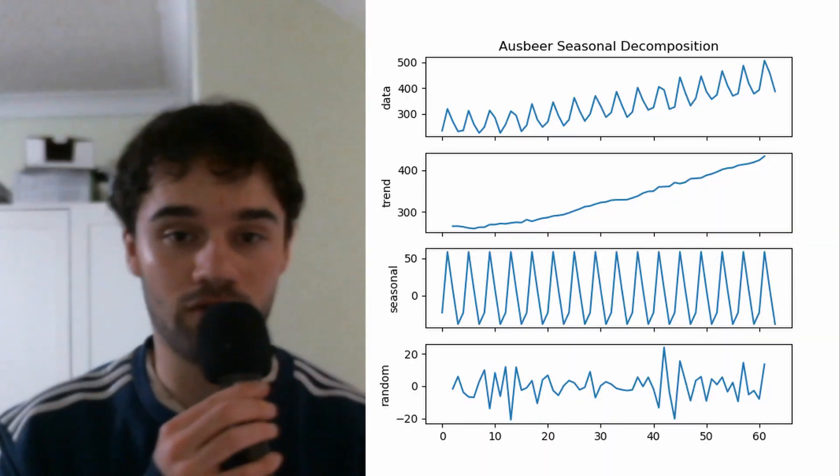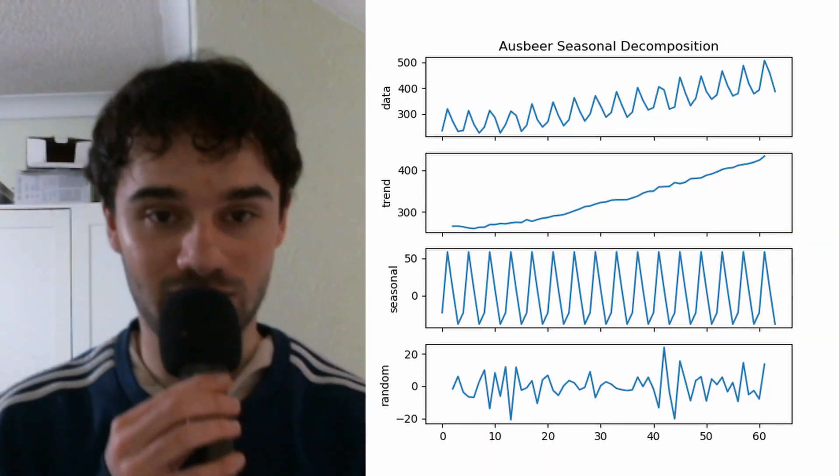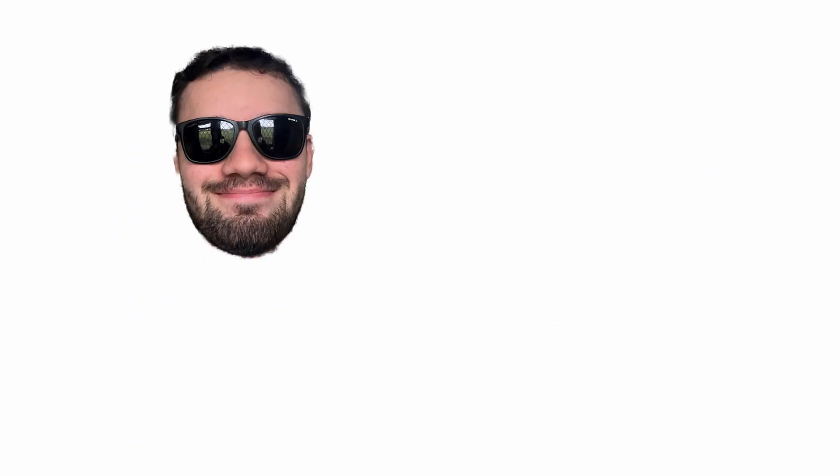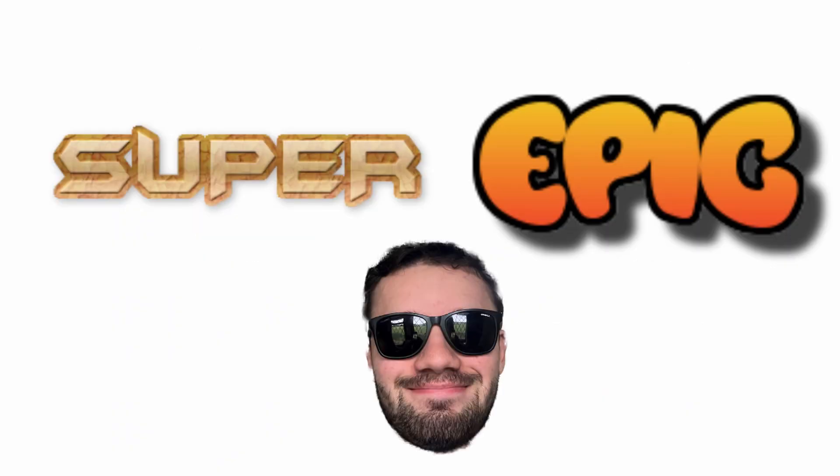For this project, I'm going to use something called time series analysis. This means I'm going to calculate the number of connections from the data I've just collected per minute. Then we'll create a graph, which we're hoping will look something along the lines of this. Time for a super epic coding montage.